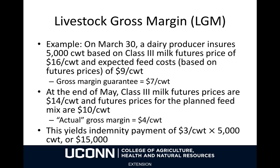Here's an example of how the Livestock Gross Margin Program's payments work. Say that on March 30th, a dairy producer insures 5,000 hundredweight based on Class III milk futures prices of $16 per hundredweight and expected feed costs based on futures prices of $9 per hundredweight. Then the gross margin guarantee is going to be $7 per hundredweight — $16 minus $9. If at the end of May Class III milk futures prices are $14 per hundredweight and futures prices for the planned feed mix are $10 per hundredweight, then the actual gross margin is $4 per hundredweight, and you're eligible for an indemnity payment of $3 per hundredweight times 5,000 hundredweight insured, or $15,000.